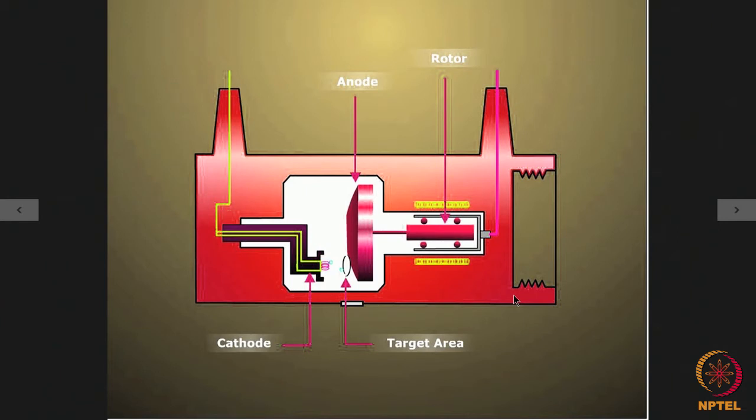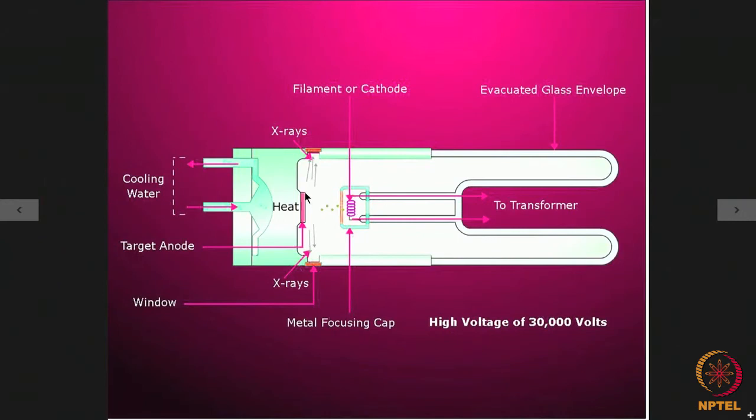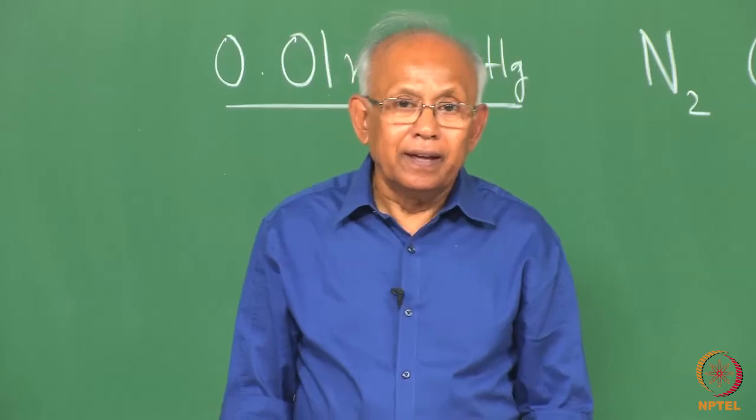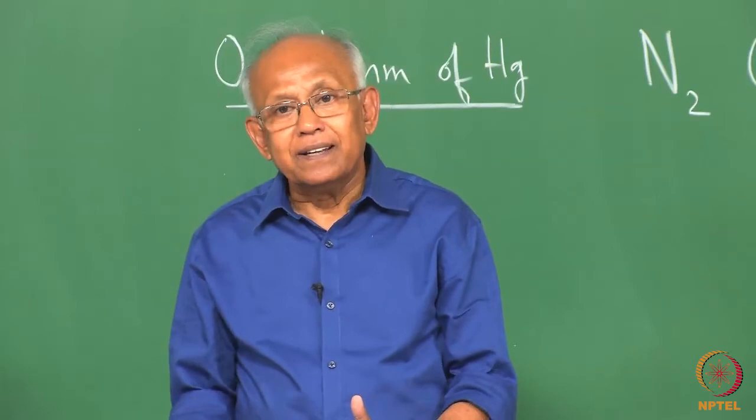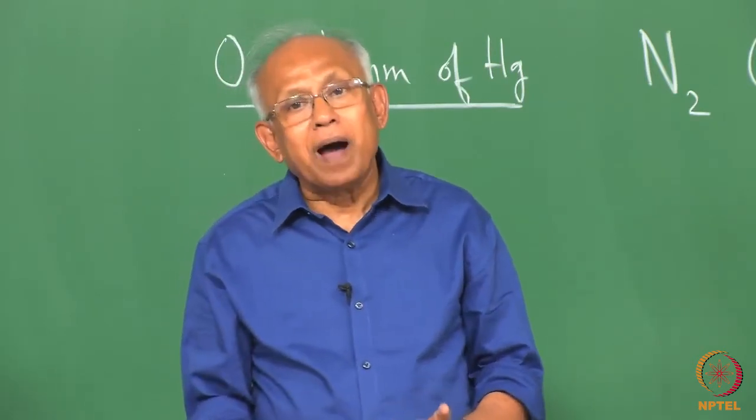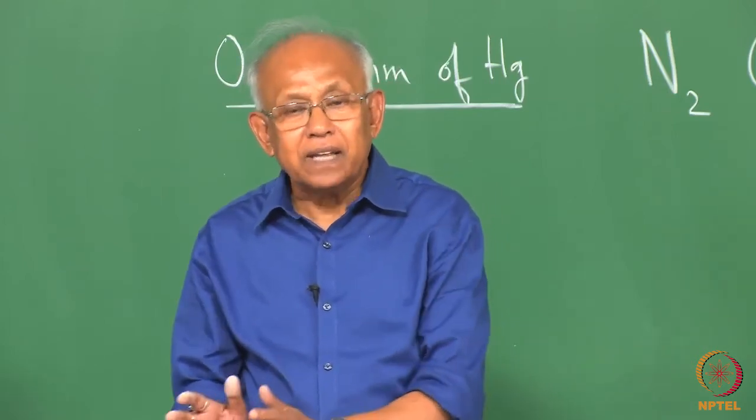There can be another type of x-ray tube also. In the previous case, the target is fixed here, the entire tube is sealed in the factory and it comes to the laboratory as such. If I want to have the provision to have a copper target, a molybdenum target and a chromium target, then I will have to buy three such tubes, one with a copper, another with a chromium, another with a molybdenum target.